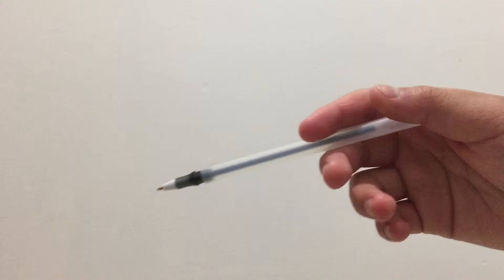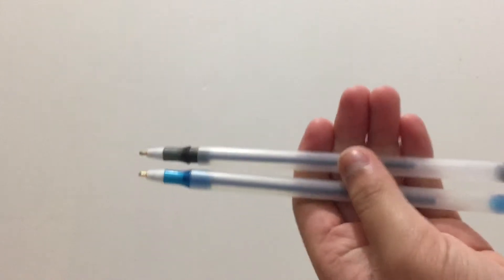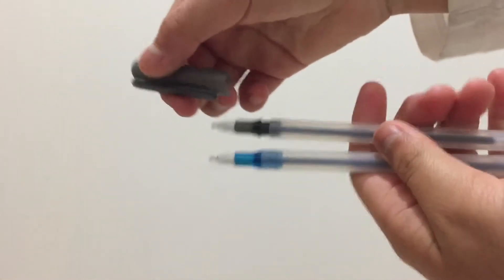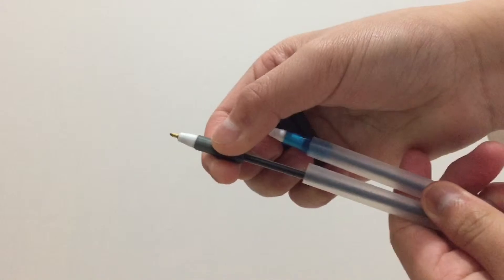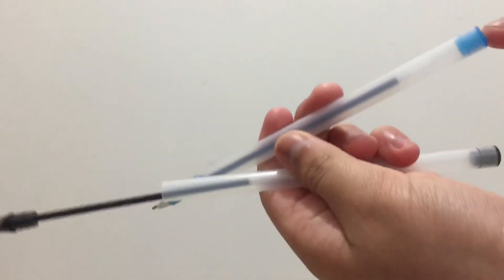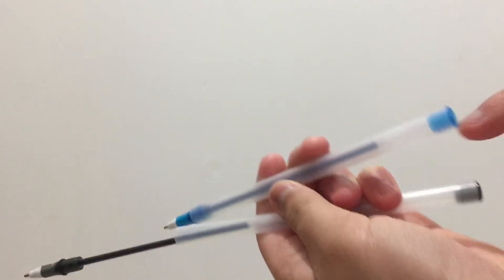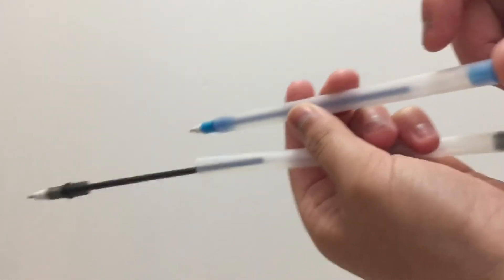The first step in making this is to get out two of these up and up pens, as you can see right here. You also need the caps of both of them. What you want to do with one of them is take the ink out and then take this part out that you don't need, and then you have to just put the ink right there and it'll fit on perfectly.